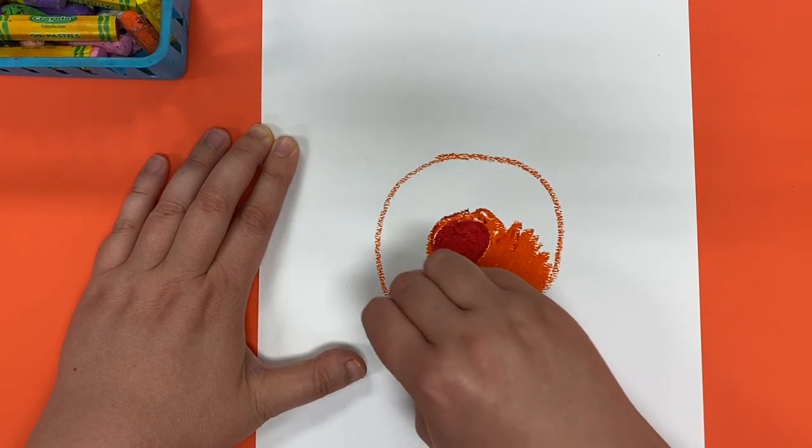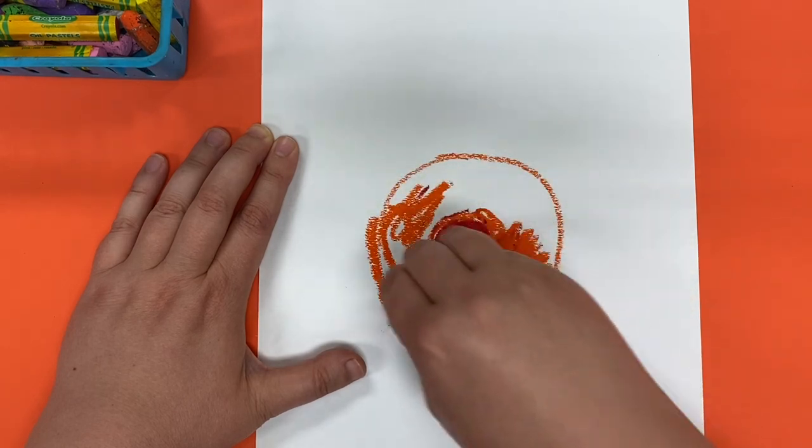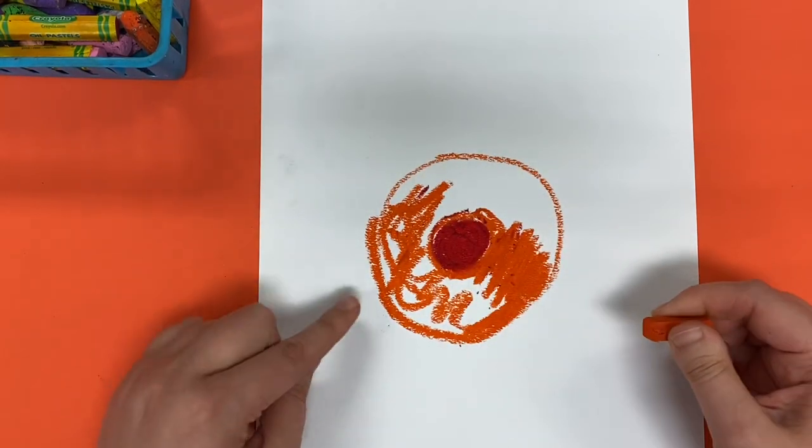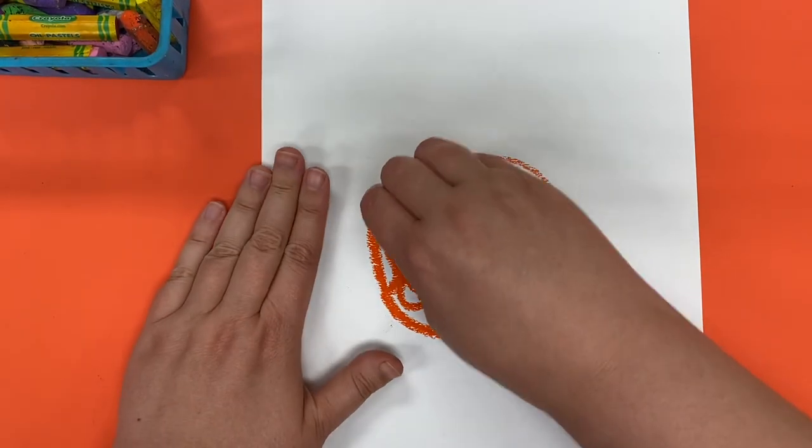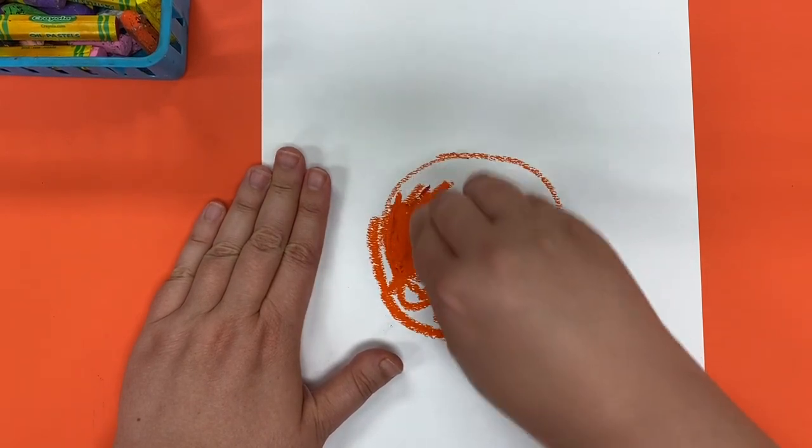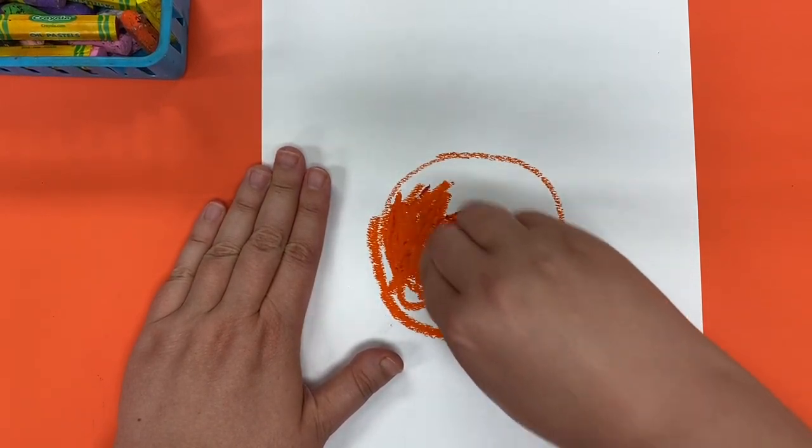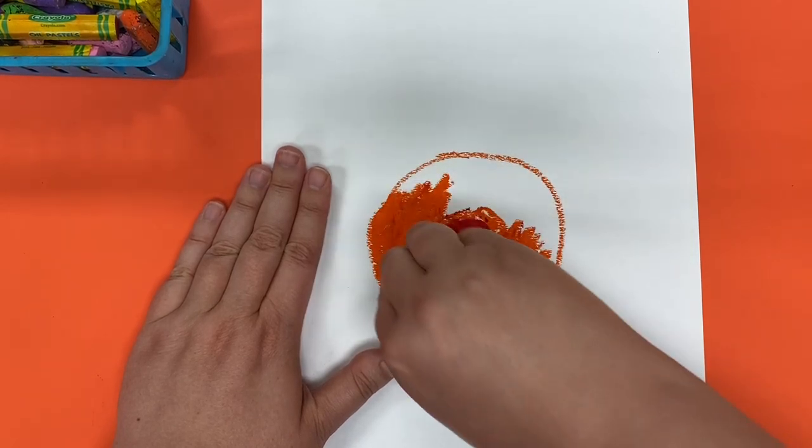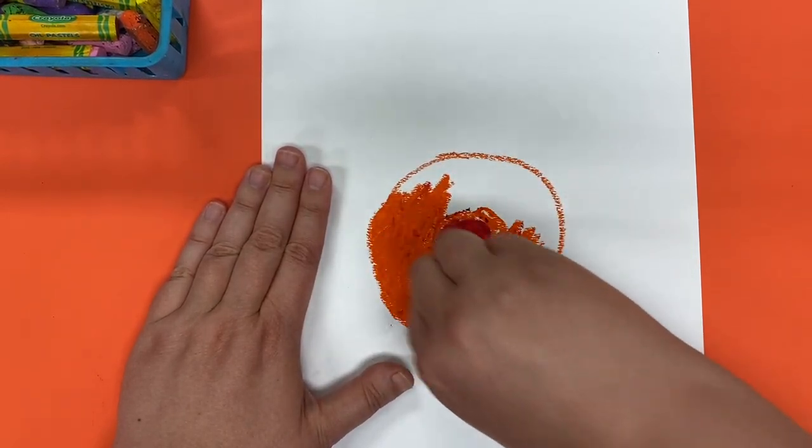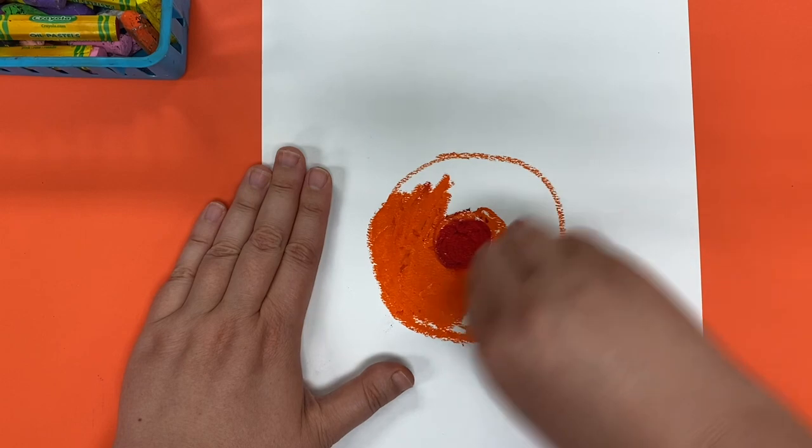So I would take my time. I'm not going to just scribble like this because that's going to leave a bunch of little white spaces. I'm going to take my time and make sure I'm getting a completely solid layer of color that is really bright and really thick.